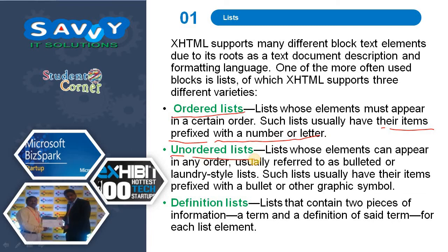Unordered list — lists whose elements can appear in any order. Usually they are referred to as bulleted or laundry style lists.